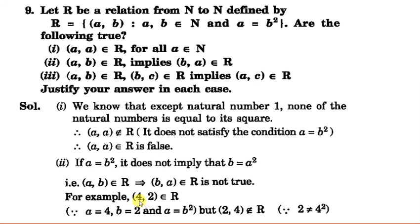For example, (4,2) belongs to R because 4 is equal to 2². But (2,4) will not belong to R because 2 is not equal to 4². It means (a,b) belongs to R but (b,a) does not belong to R. So this statement is also false.